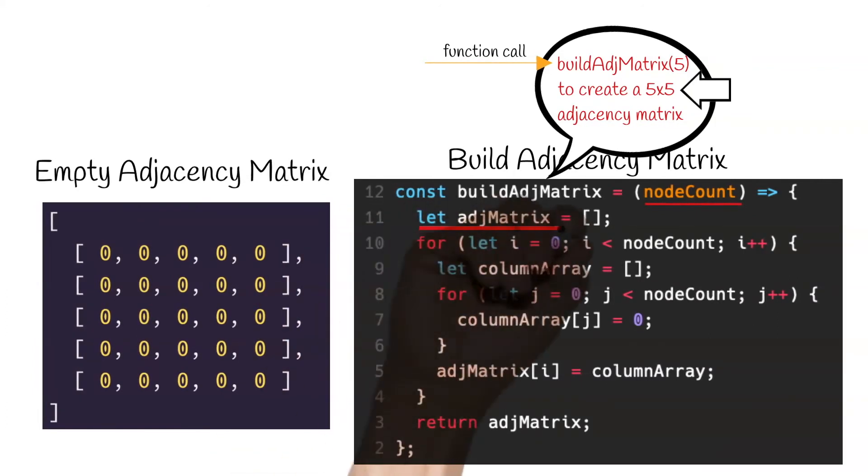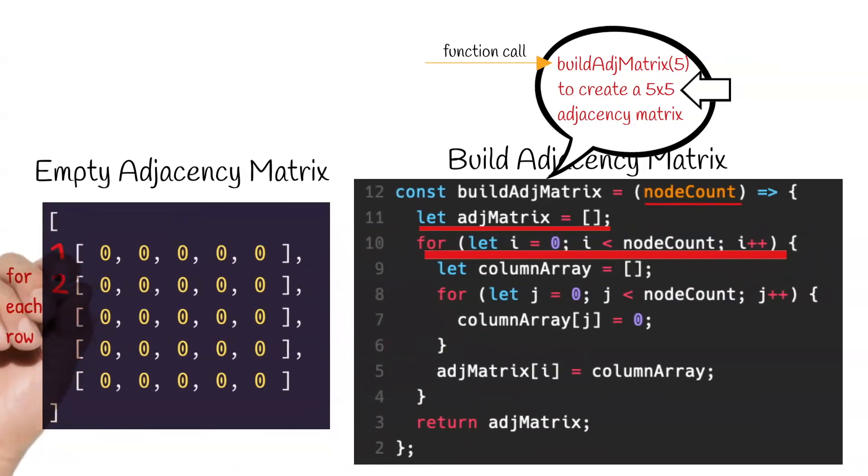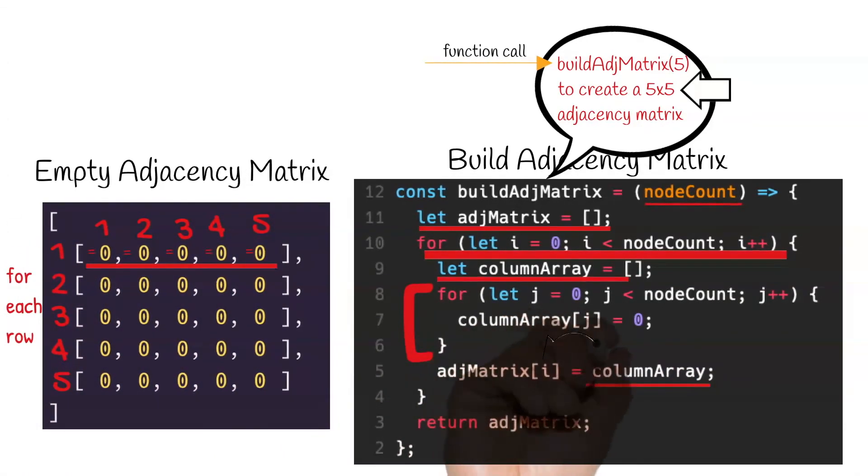Next, we declare an empty array. Here, for each row up until the node count, we create an empty column, and then we iterate through the node count again, this time adding an index containing the value 0 to the empty column for each iteration. We then add the newly created array of columns to its corresponding row. Once this is done for each row, we return the adjacency matrix.